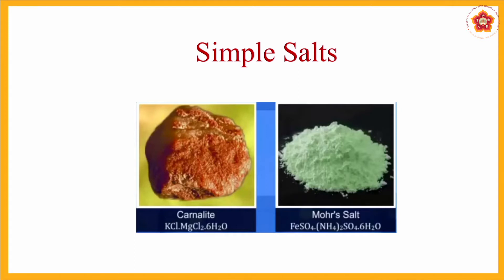From carnelite you can get potassium ions, chlorine ions, magnesium ions, and water, which can split into H⁺ and OH⁻. From Mohr salt you can get iron ions, sulphate ions, ammonium ions (NH₄), and water. What this means is that a simple salt need not mean just NaCl — it can be a larger compound like carnelite or Mohr salt; the key thing is it splits up completely.